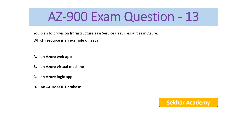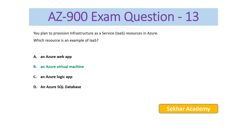AZ-900 exam question number 13: you plan to provision infrastructure as a service resources in Azure. Which resource is an example? Options: A) an Azure web app, B) an Azure virtual machine, C) an Azure logic app, D) an Azure SQL database. Azure web app comes under platform as a service, and logic app and Azure SQL database are all managed by platform as a service. So the right answer is B, Azure virtual machine.